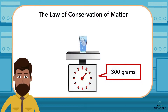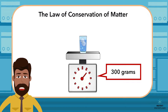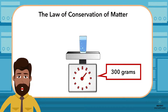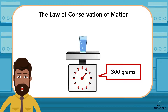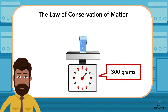When we weigh the glass of ice water, it is 300 grams. Now the ice will melt, since it is warm here. See how even when the ice melts, the weight of the water stays the same. That is because matter — in this case the ice — is a solid and does not disappear when the substance changes, or when the ice melts.